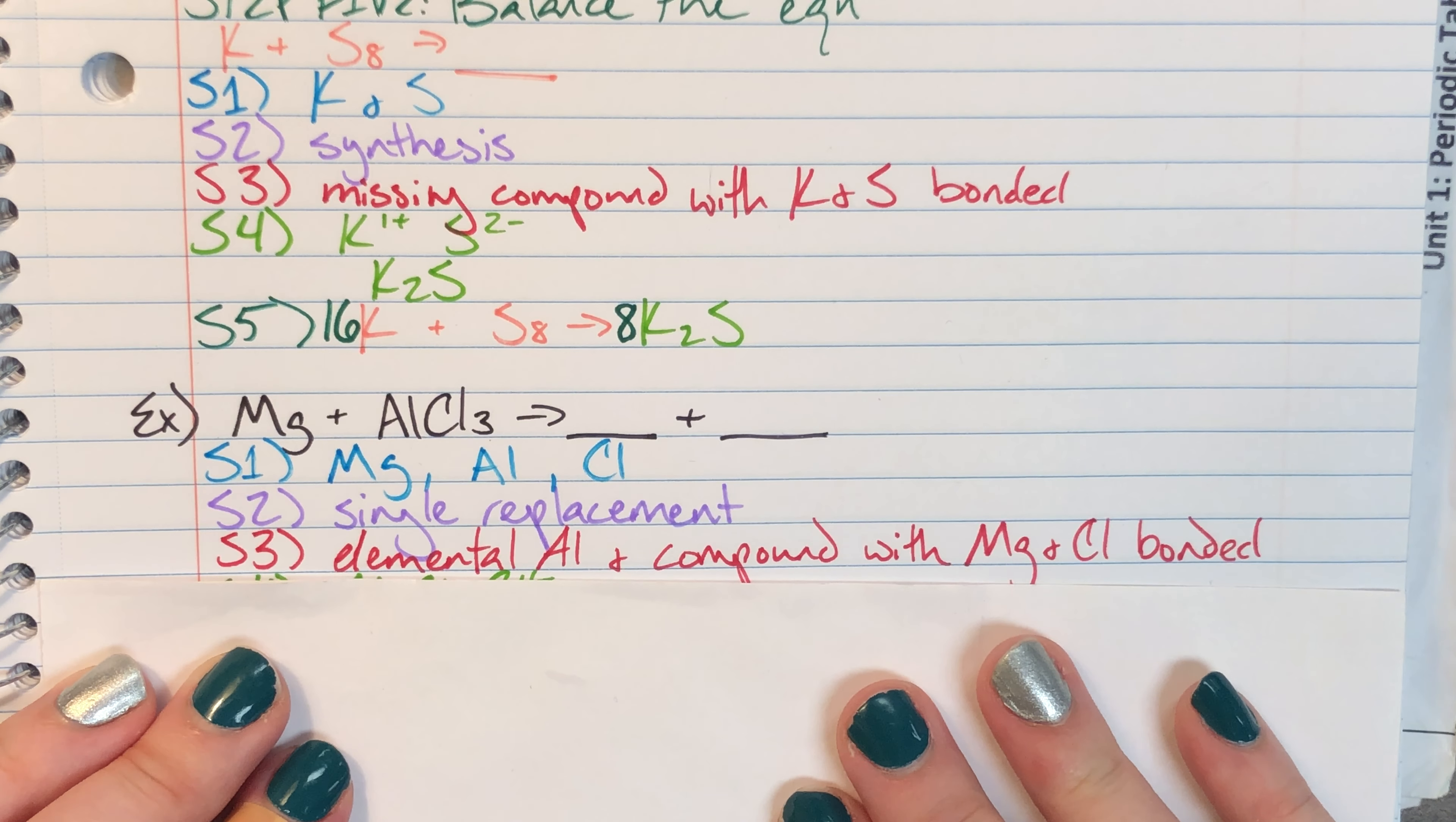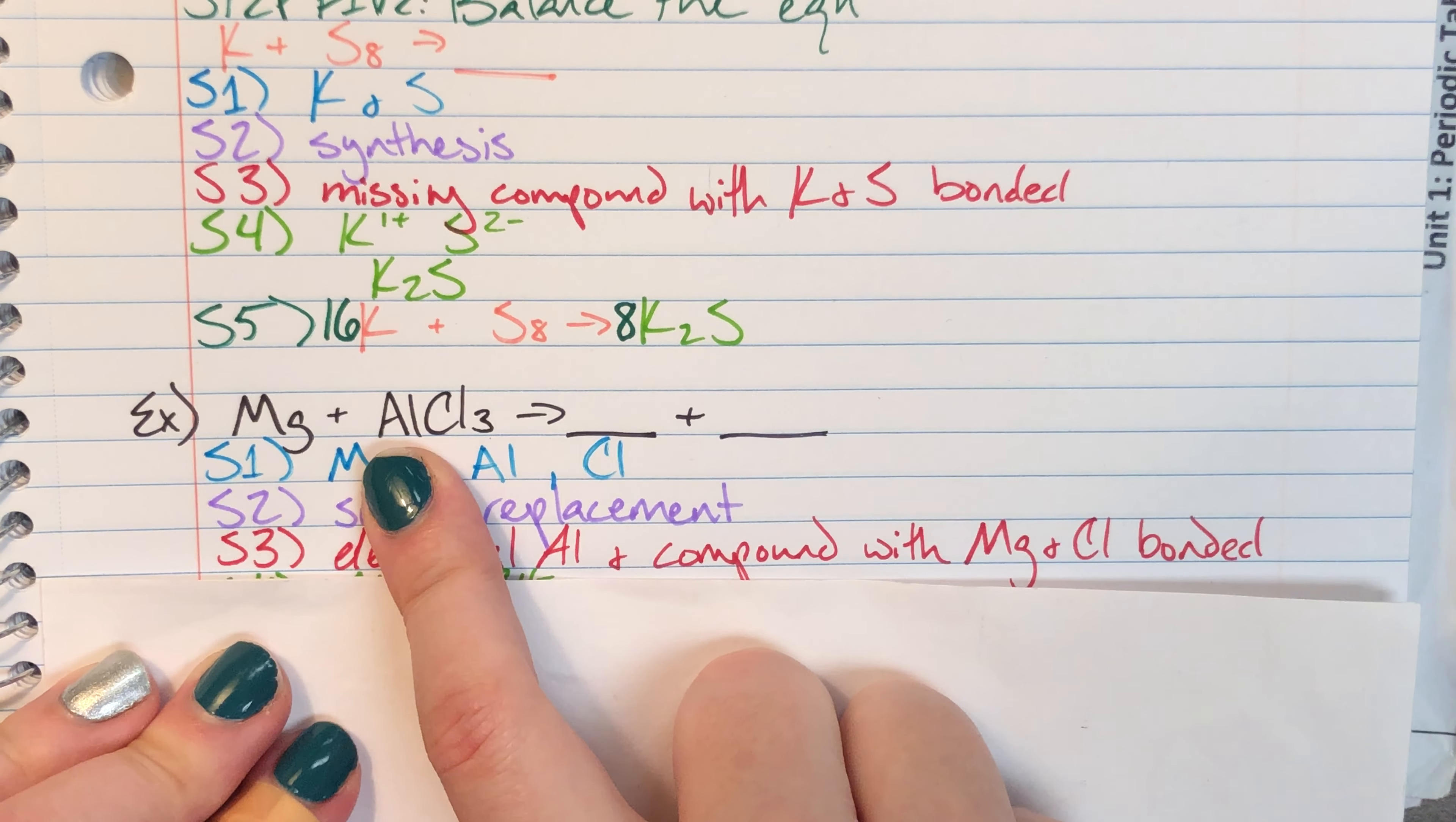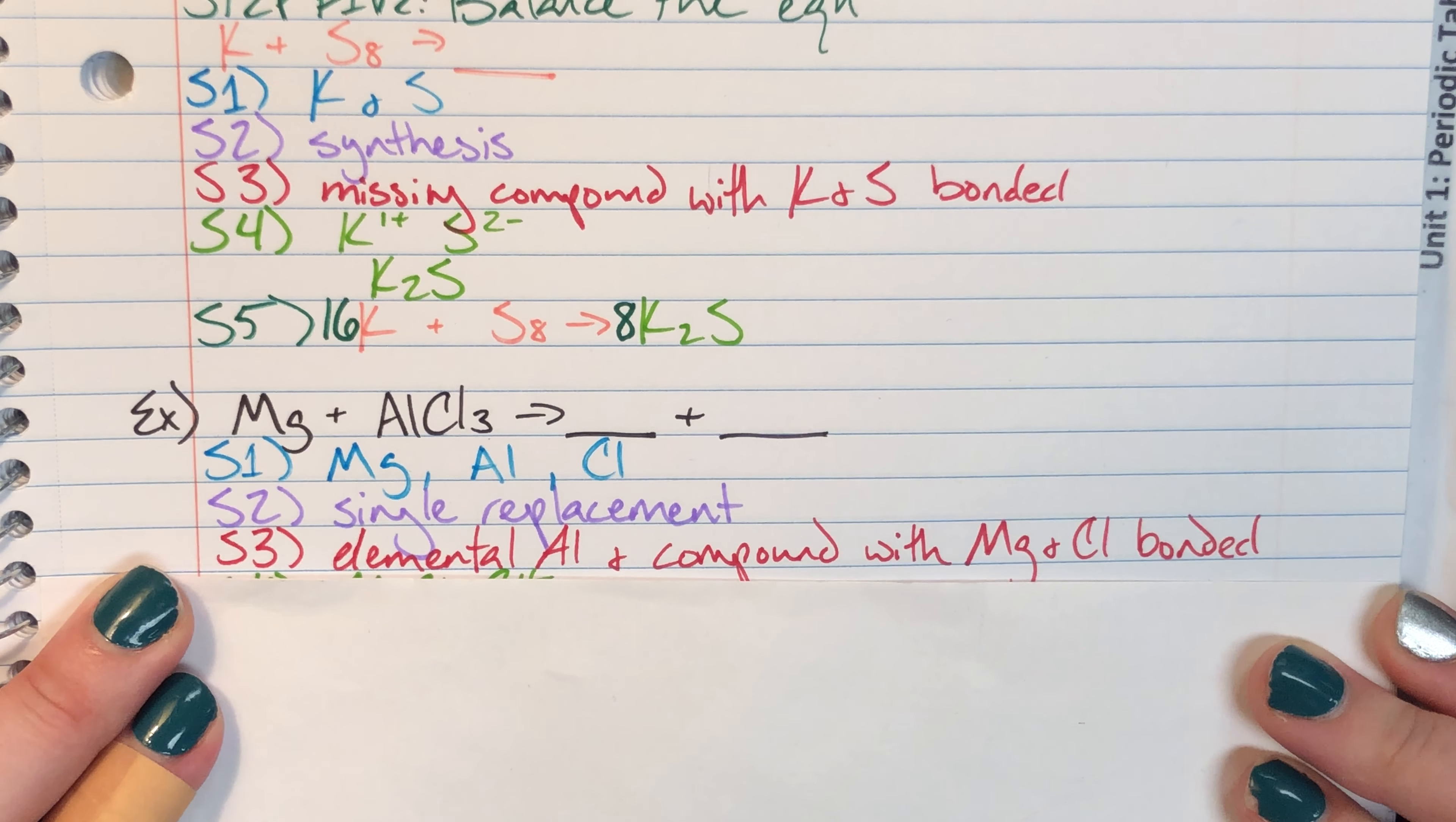And that means that I can follow that pattern to realize that aluminum is the one that is going to be kicked off of the compound and it will be replaced with magnesium. And I know this because aluminum and magnesium are both metals. They will form cations which means that since like has to replace like, magnesium is going to take aluminum's place.